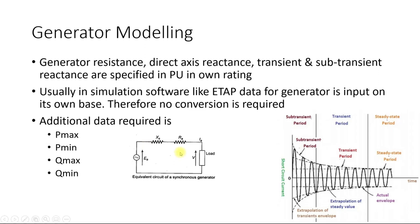For a generator, these reactance values vary with respect to time. Whenever there is a short circuit fault on the generator side or on the system, your generator goes through some transformation. Usually for the first few cycles, your reactance is limited by the sub-transient period, and the reactance within this period is known as sub-transient reactance.